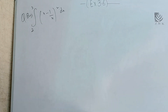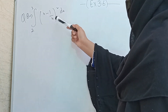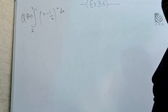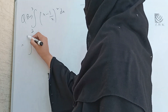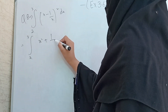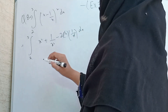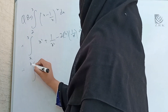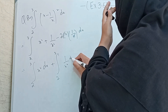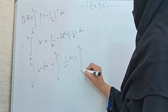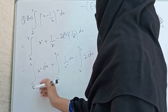The next question is: integral from 2 to 3 of (x − 1/x)² dx. To solve this, we first expand using the formula (a − b)² = a² + b² − 2ab. So we get: integral of x² dx plus integral of 1/x² dx minus integral of 2 dx, all from 2 to 3.